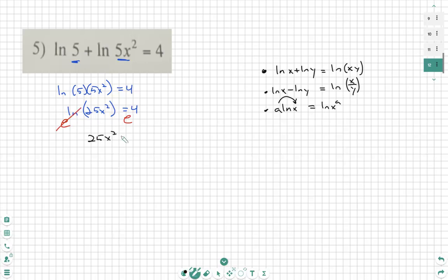25x squared equals e to the 4th. We'll divide by 25. We see that x squared is equal to e to the 4th over 25.